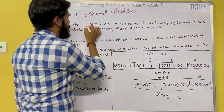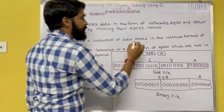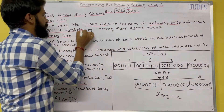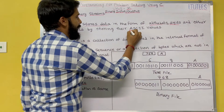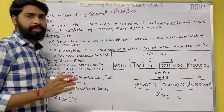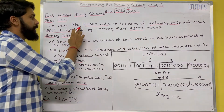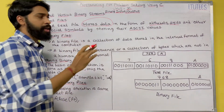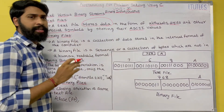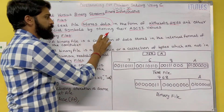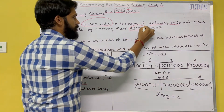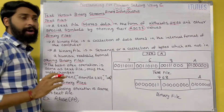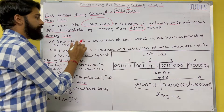What is a text file? A text file stores data in the form of alphabets, digits, and other special symbols by storing their ASCII values.